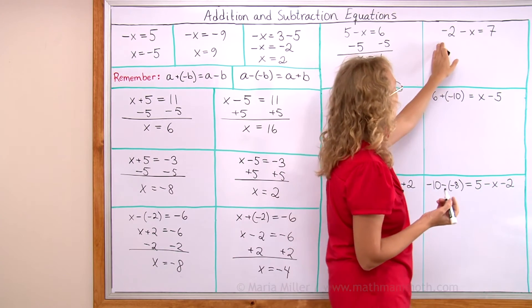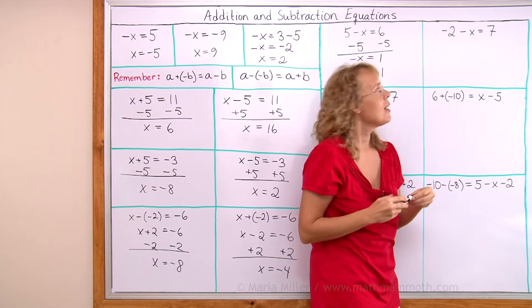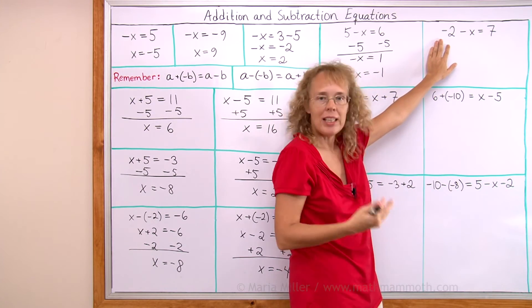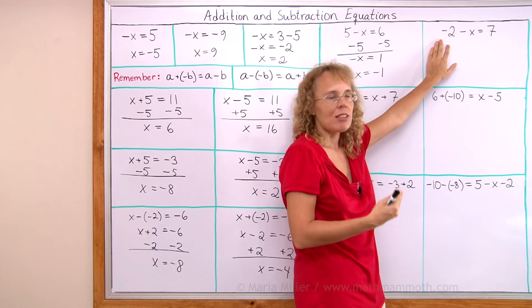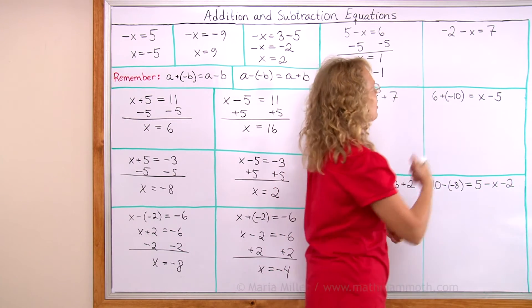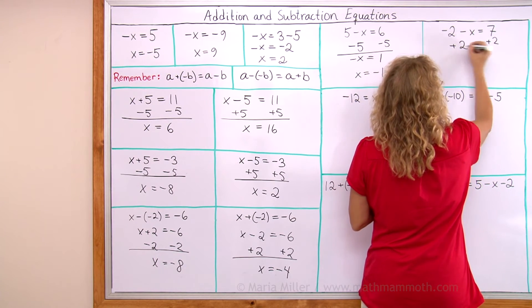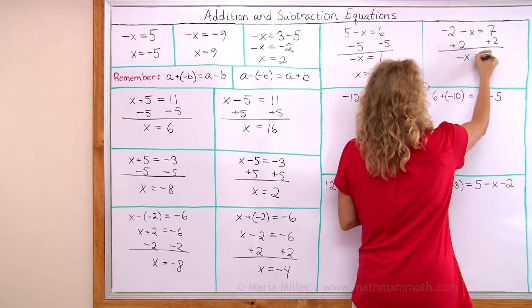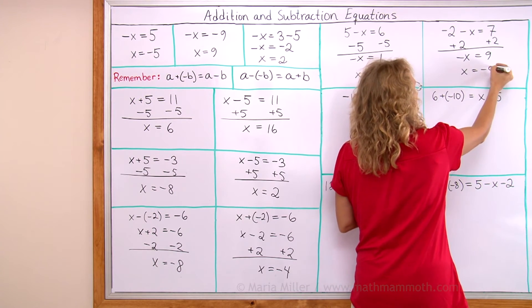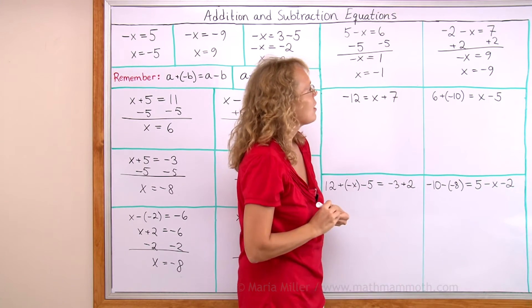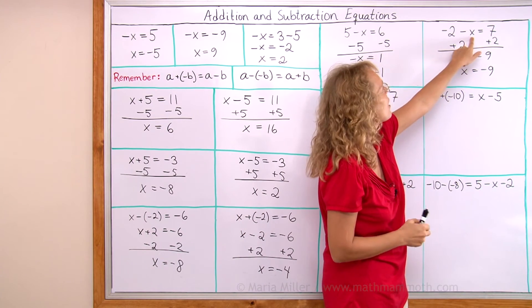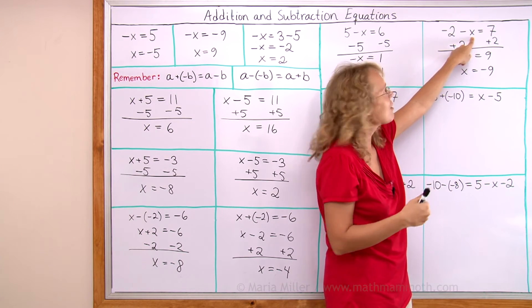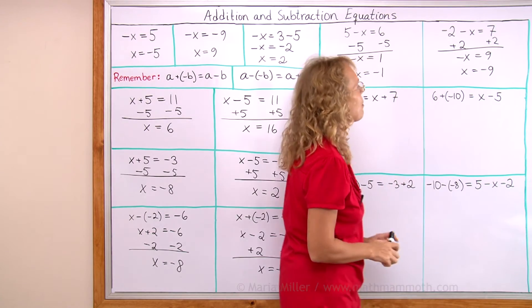Here I have negative 2 minus x. I'll leave negative x alone on this side and worry about getting rid of the negative 2 — to do that I add 2 to both sides. Negative 2 and add 2 cancel, the negative x remains, and over here I get 7, so x equals negative 9. Checking: if I put negative 9 in, I get negative 2 minus negative 9. That turns into addition — negative 2 plus 9 equals 7. It checks.